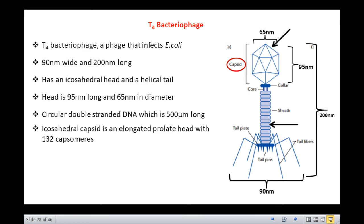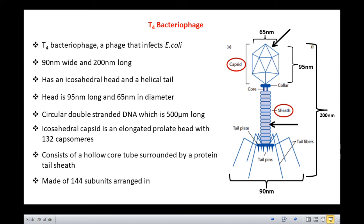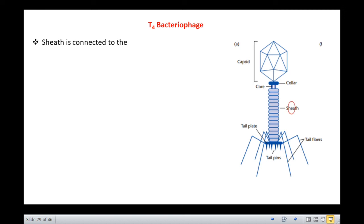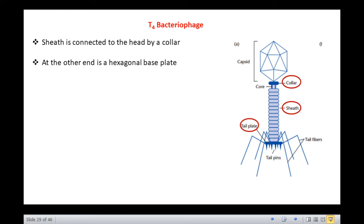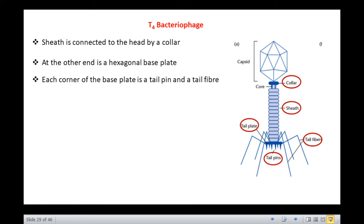The icosahedral head is an elongated prolate head with 132 capsomeres, of which 12 would be pentamers and the remaining 120 would be hexamers. The tail shows helical symmetry and consists of a hollow core tube through which the nucleic acid passes during infection. It is surrounded by a protein tail sheath made of 144 subunits arranged in 24 rings of 6 subunits each. The sheath is connected to the head by a collar, and at the other end of the tail is a hexagonal base plate with tail pins and tail fibers at each corner.